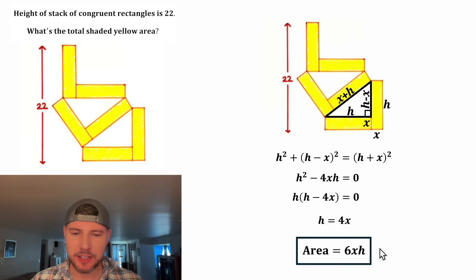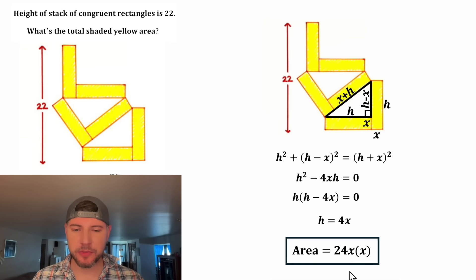Let's plug it into this. In the place of this H, let's plug in 4X. 6 times 4 is equal to 24, and X times X is equal to X squared. So now we have a new formula for our area, 24X squared in terms of just X.